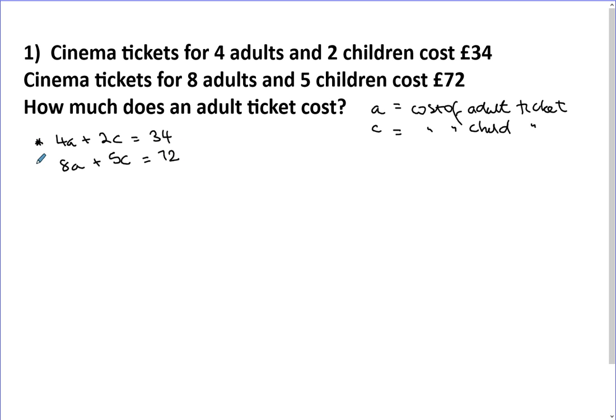I'll just put a star there and a T there, and I'll let you know why later. So what I do is I always deal with the second letter. And here you can tell for 2C and 5C to be the same, we have to find the lowest common multiple of 2 and 5, which will be 10. So I'm going to multiply this whole line by 5 and this whole line by 2. So I'm going to get 20A plus 10C equals 170, and multiplying that one by 2, I get 16A plus 10C equals 144.